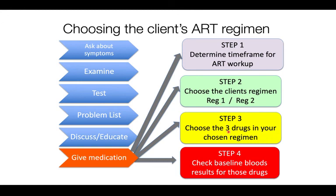The choice of drugs is determined by what you found on history and physical exam. If it's an elderly patient who is diabetic and you suspect kidney failure, you want to avoid tenofovir. If there's a history of active psychosis, you cannot give efavirenz. If the patient is confirmed pregnant at one or two weeks, you want to avoid dolutegravir.